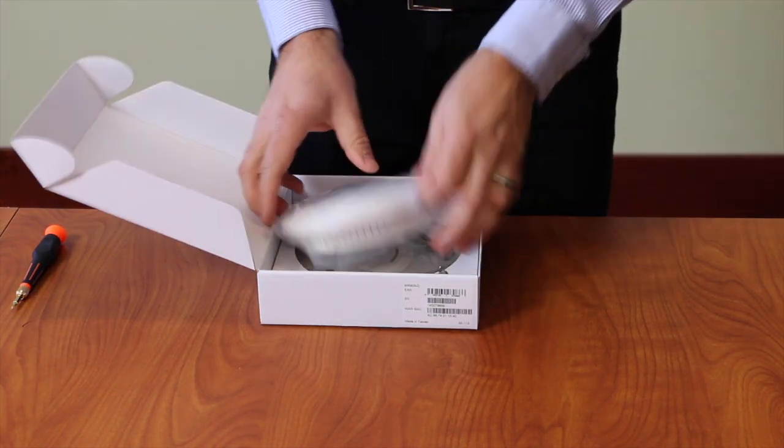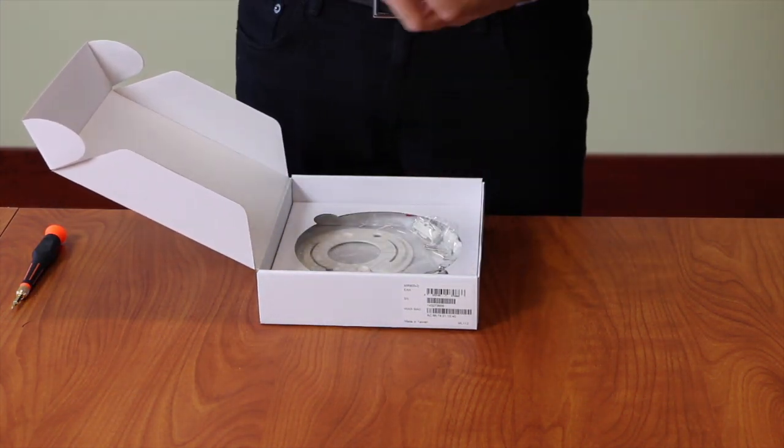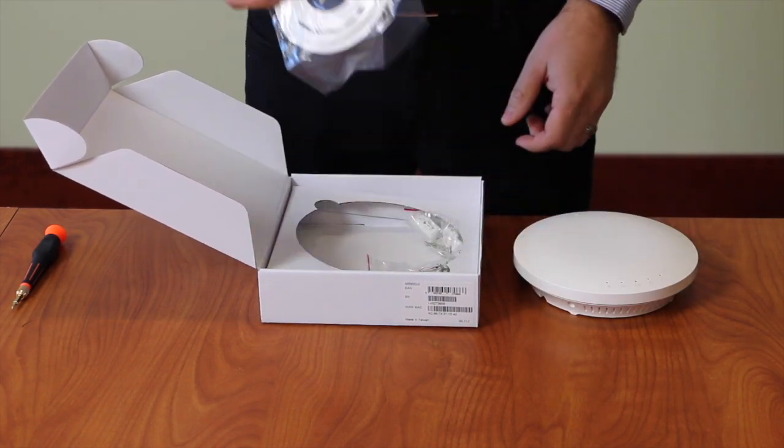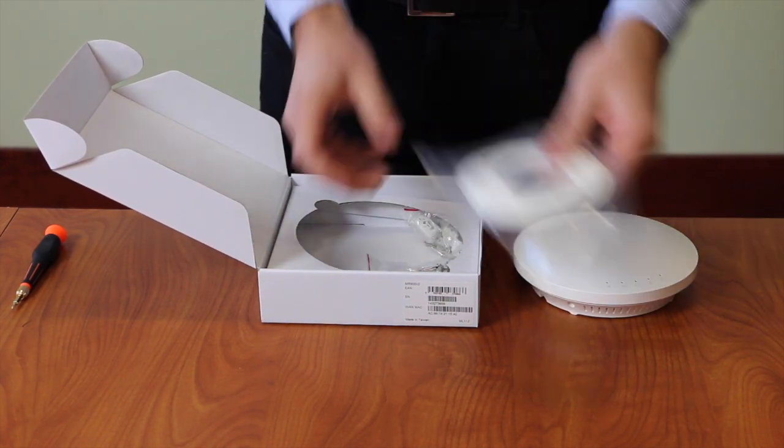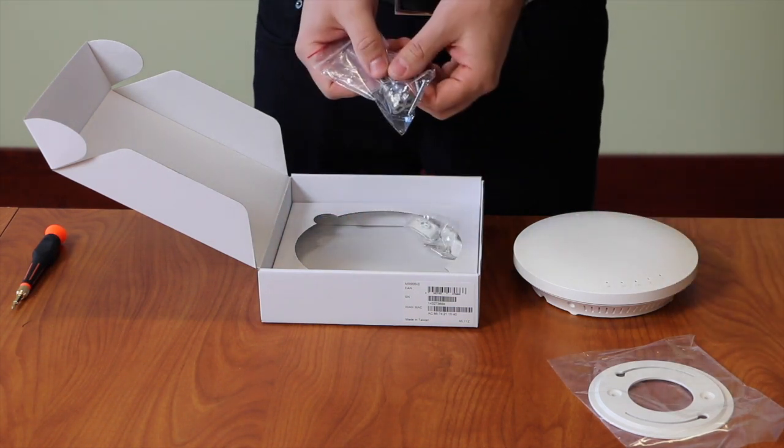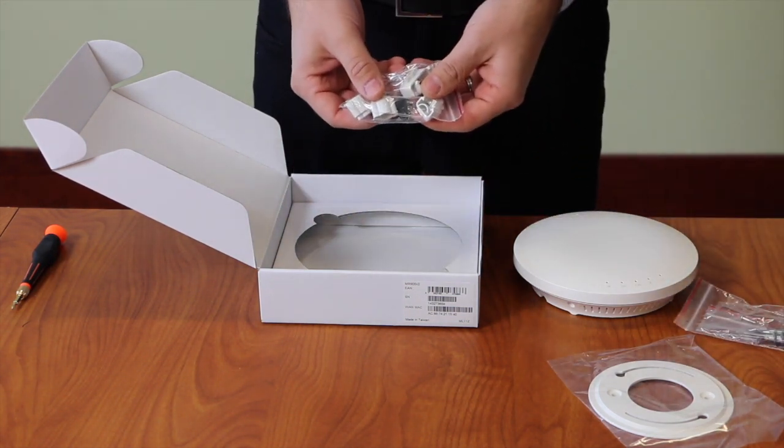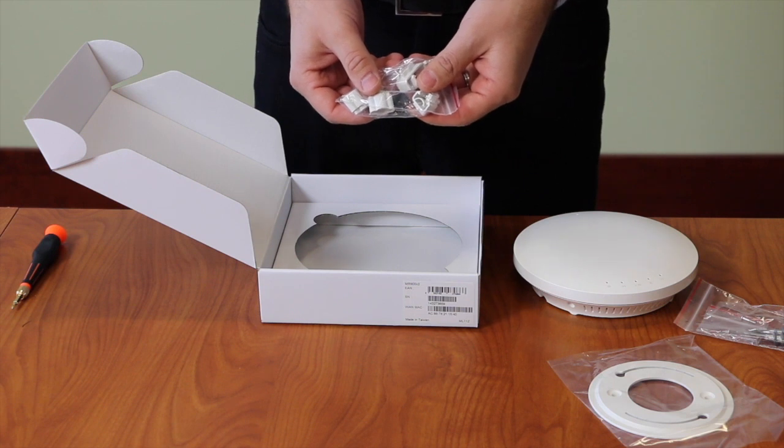In the box you'll see the access point, a solid wall or ceiling mounting bracket, some heavy-duty drywall screws, and some clips to mount on a 9/16th or 15/16th drop ceiling rail.